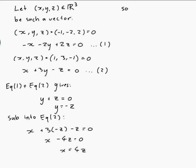So xyz is in fact equal to 4z, minus z, z and I can pull the z out the front of that. That would be 4, minus 1, 1.